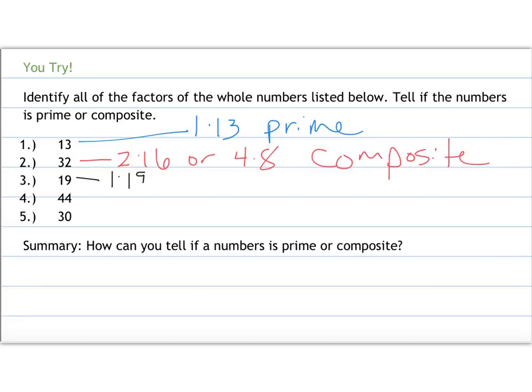19. Thinking of factors, I know 1 and 19. It's not even, so it's not divisible by 2. It's not divisible by 3, 4, 5, 6, 7, 8, 9, and then it's too small to be divisible by 10 because it's not 20. So this one is also prime. 44. Again I see that's even, so it is divisible by 2. So we have factors of 1 and 44, 2 and 22, and there's more factors, 4 and 11, but right now I already know that it's composite.